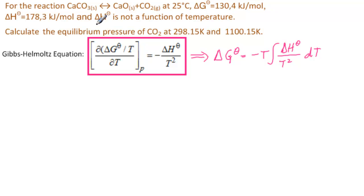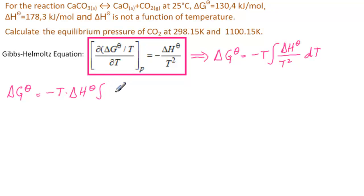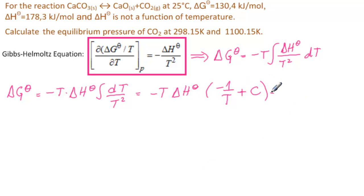We can write the Gibbs-Helmholtz result as: ΔG° = −T ∫(ΔH°/T²)dT. Because ΔH° is not a function of temperature, it is constant and can be taken out of the integral. Integrating, we get ΔG° = ΔH° − T·C, where C is an arbitrary constant of integration that we will determine from the known data.